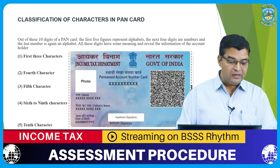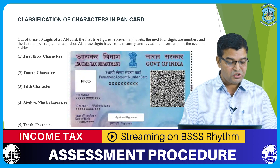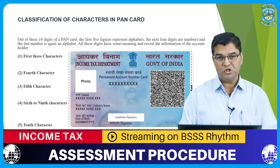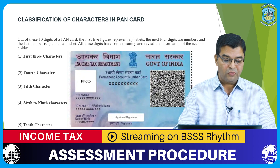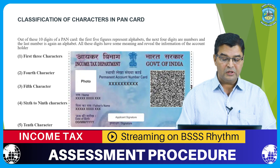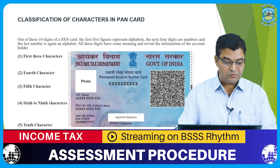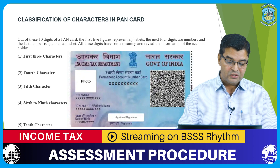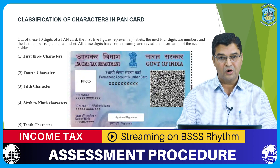The other nine letters that can represent the fourth character are C, H, F, A, T, B, L, J, and G. These letters stand for: C for Company, H for Hindu Undivided Family, F for Firm, A for Association of Persons, T for Trust, B for Body of Individuals, L for Local Authority, J for Artificial Juridical Person, and G for Government.